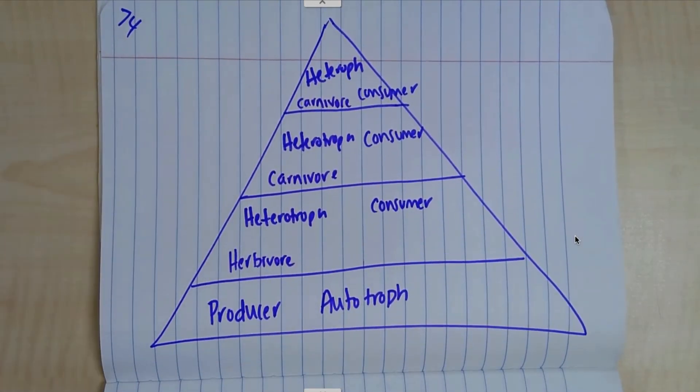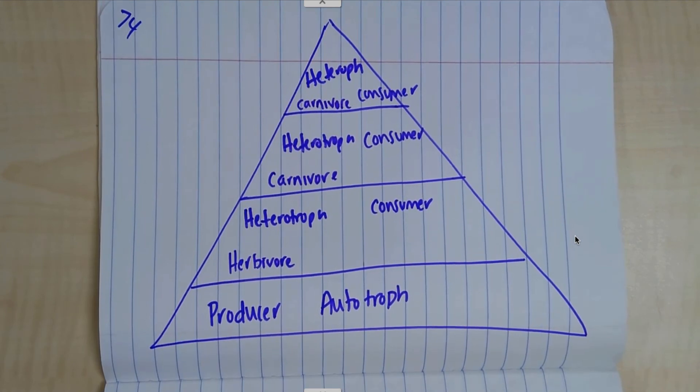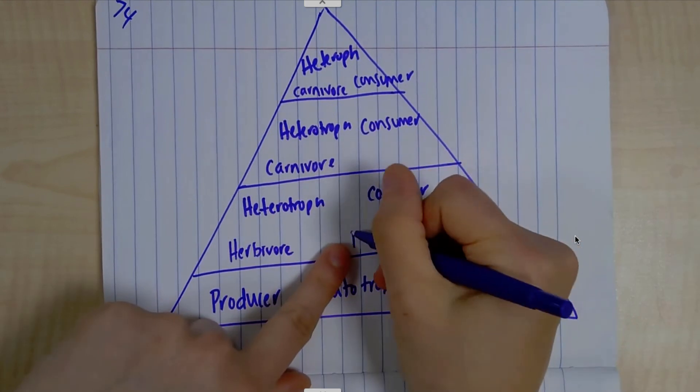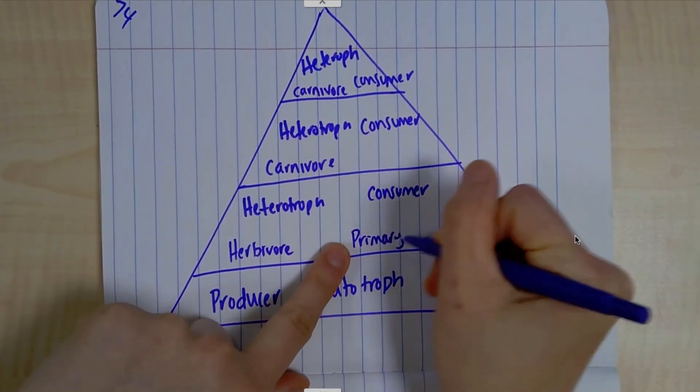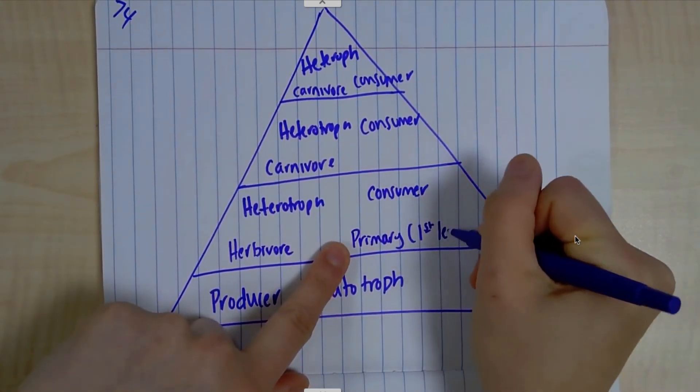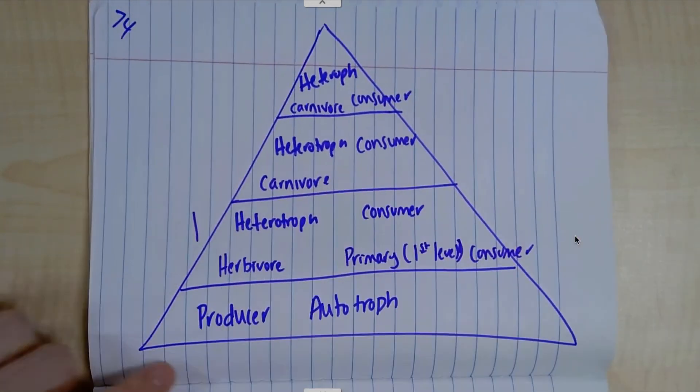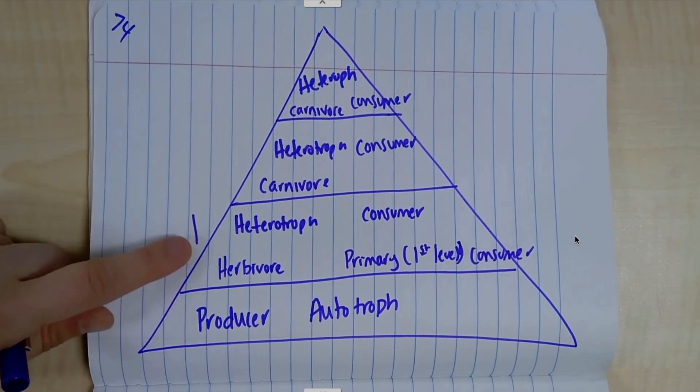Now, here's where things get a little bit fishy, is we're talking about this is our producer, but our first level consumer is called our primary or first level consumer. So it's like a one. It's not the very bottom level, but it's our first level.